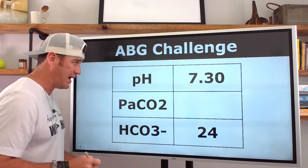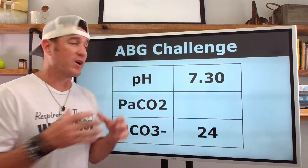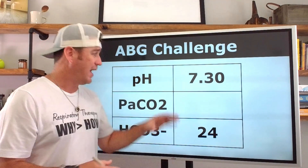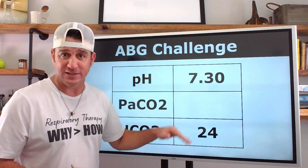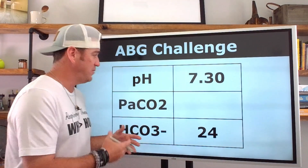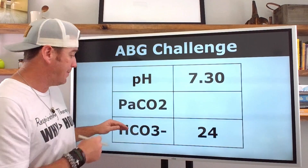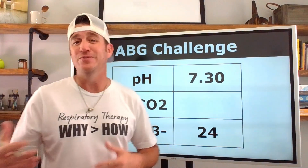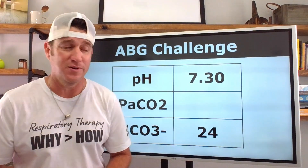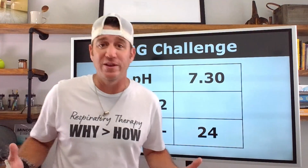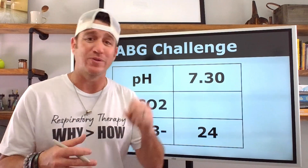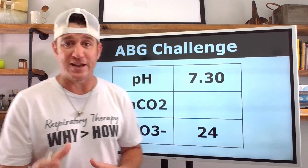What we're going to do is interpret a blood gas, but you're only going to get two values to interpret it with. I don't care so much about the actual number — there's a formula you can use to figure that out. What I'm more focused on is: if I just told you that you had a patient with a pH of 7.30 and a bicarb of 24, and maybe you did or didn't know what the CO2 was, could you interpret this blood gas? By the end of this video, you'll know you don't need all three values to know what's going on with your patient.